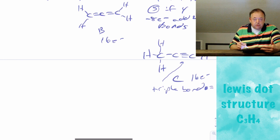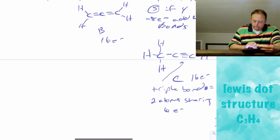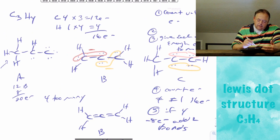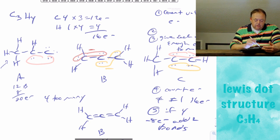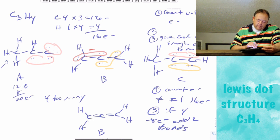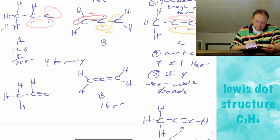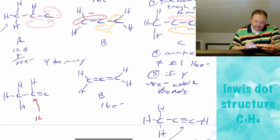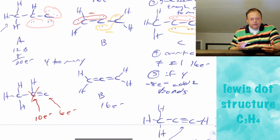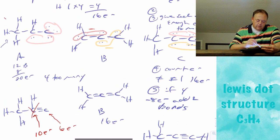A triple bond means 2 atoms share 6 electrons between them. For structure A, applying the same process creates a problem: the middle carbon ends up with 10 electrons around it — 5 bonds — which violates the octet rule for carbon, and another carbon only has 6 electrons. So structure A is not valid and was never going to work.